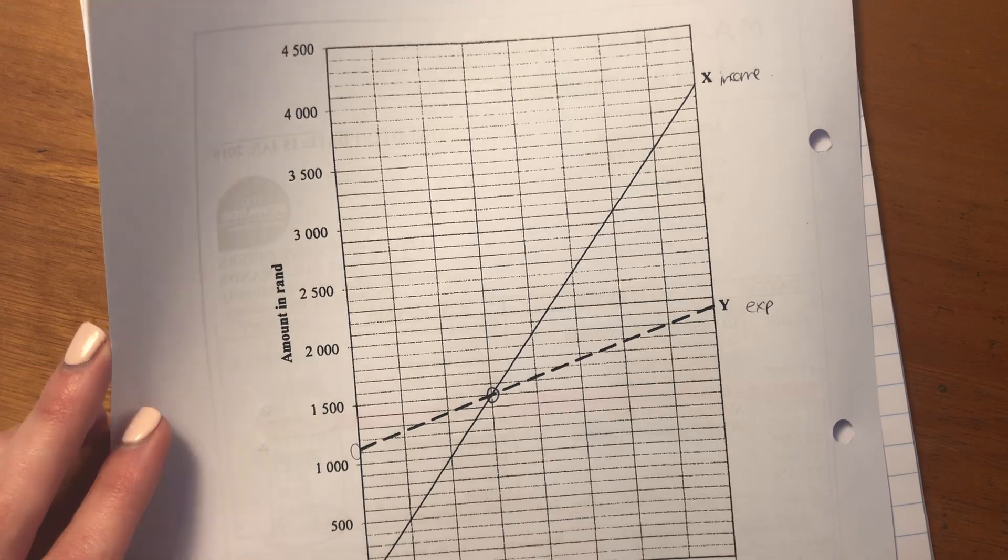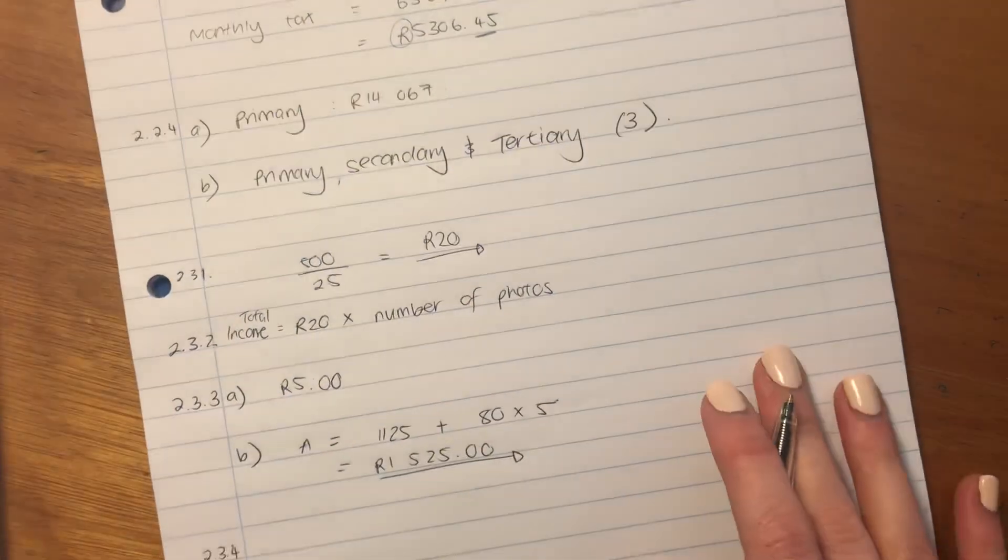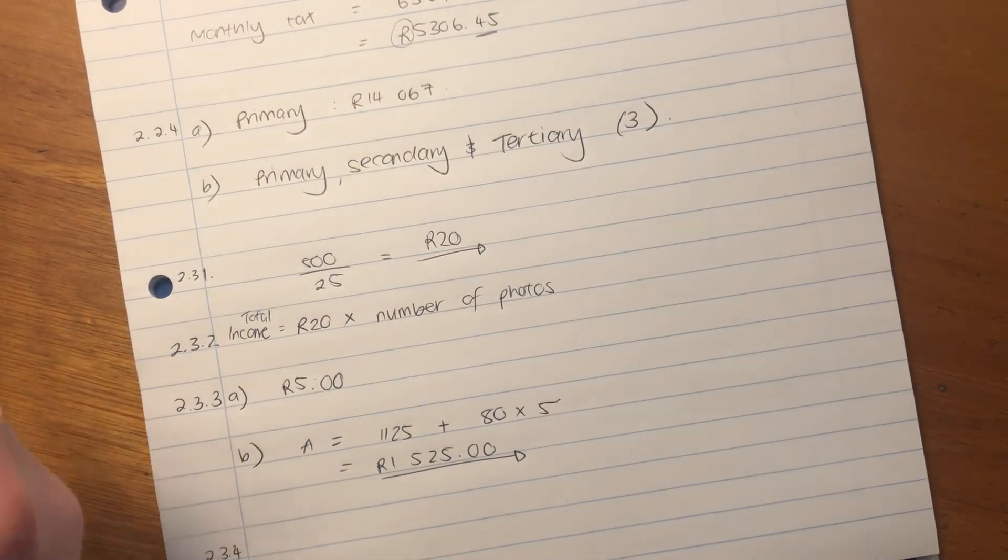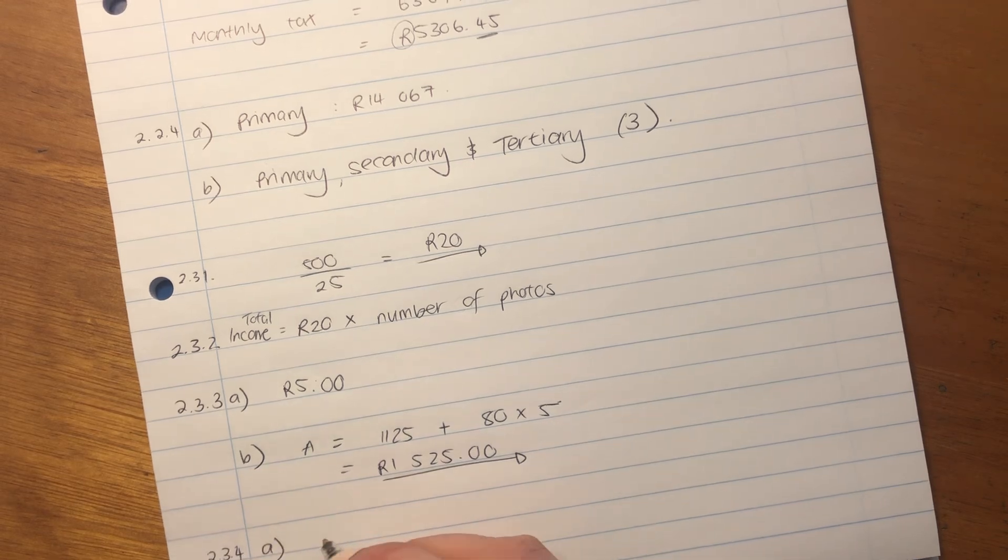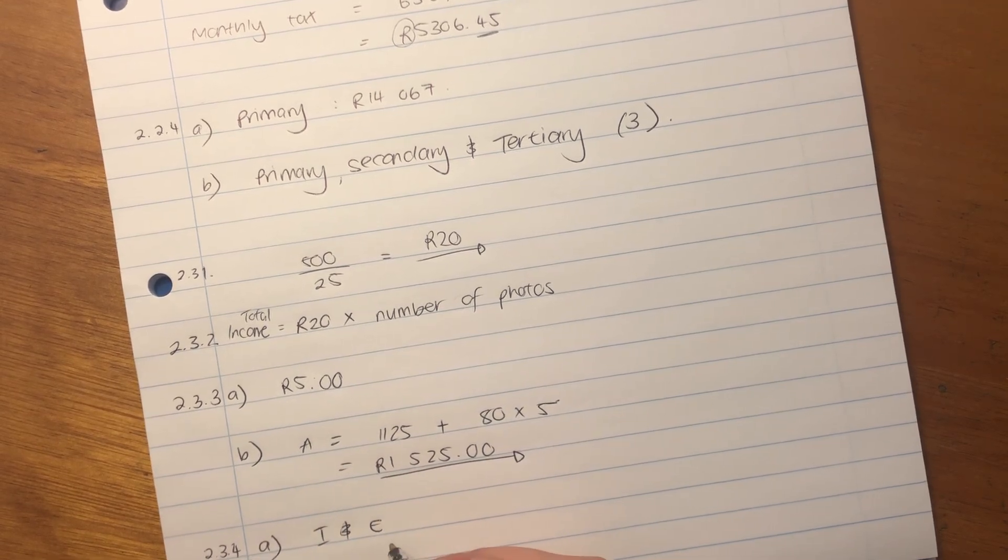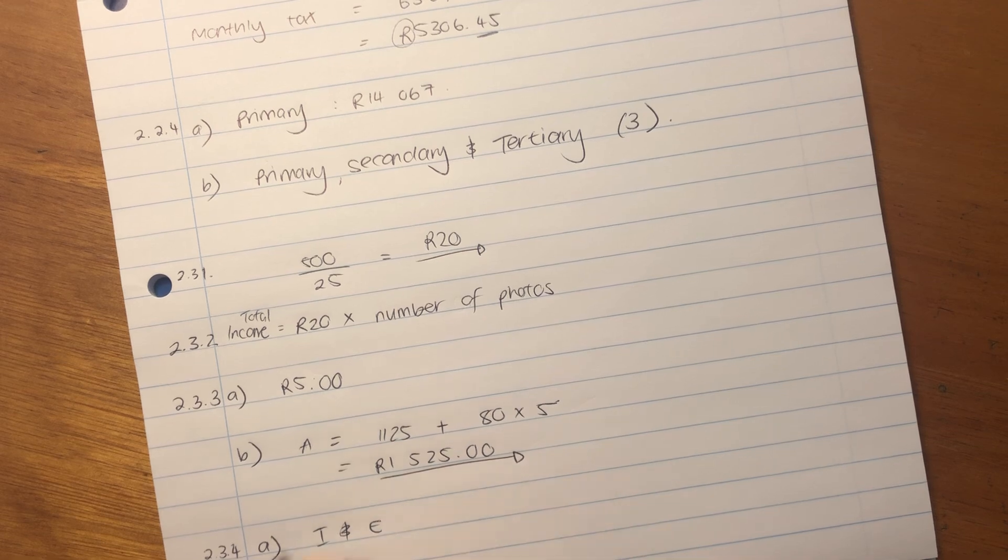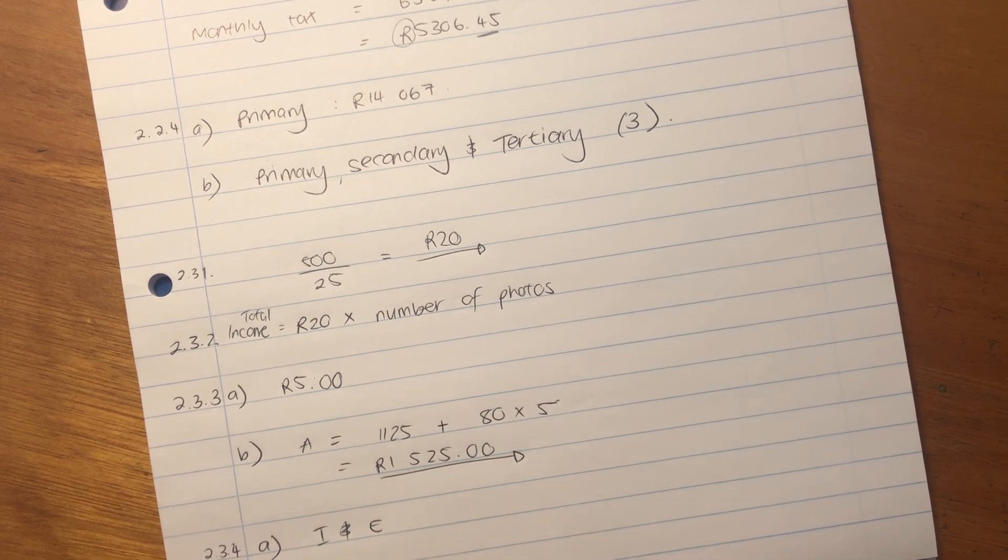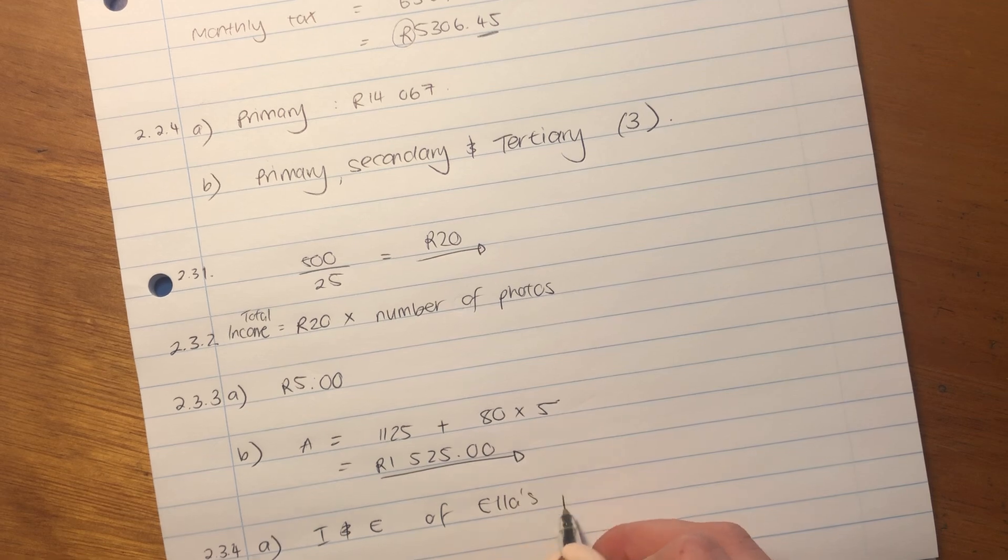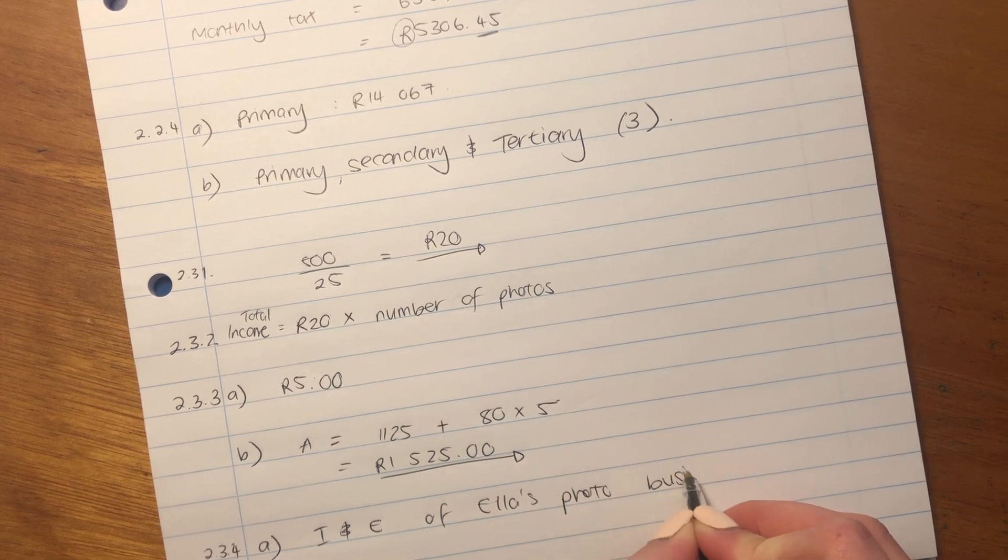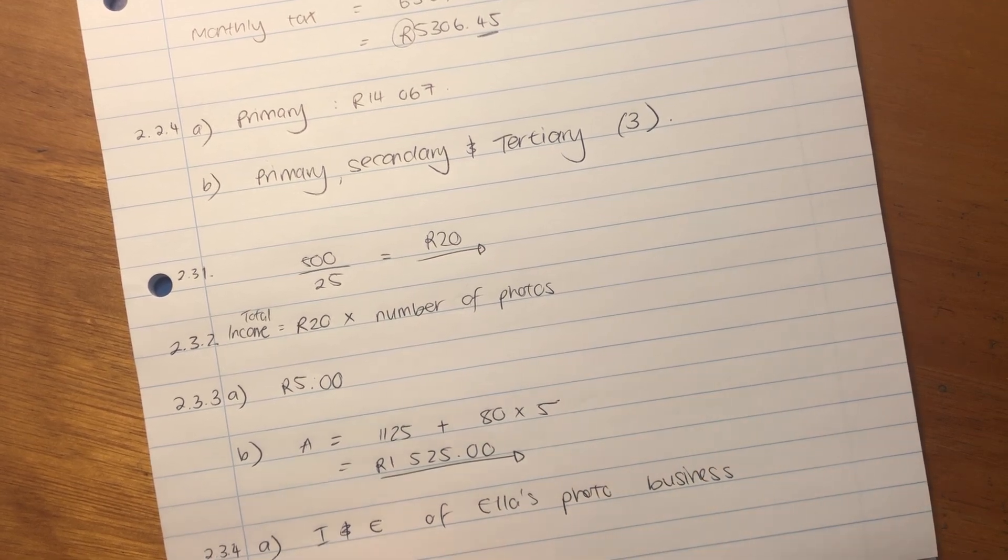And then over here, we need to give it a title. So I'm going to call it Income and Expenses of Ella's Photography Business. So you can call it whatever you want as long as you call it Income and Expenses. Please write out Income and Expenses. Don't just write it like I've done it. I'm just doing it shorthand. Income and Expenses of Ella's Photo Business. So we've given it a nice title.